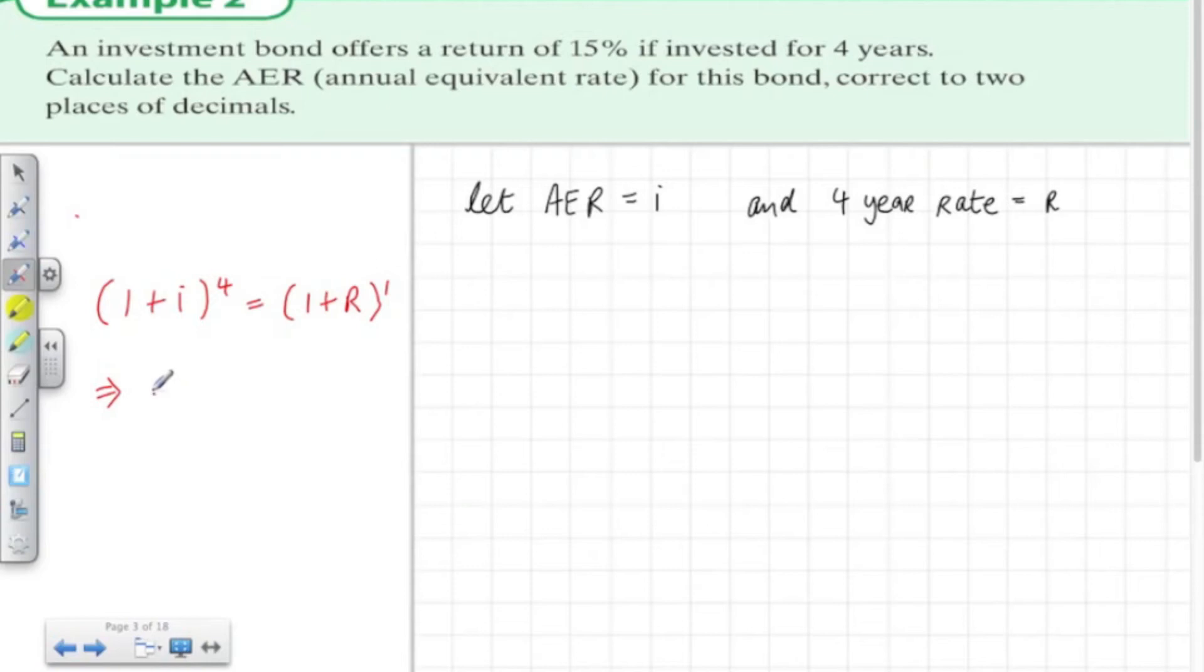So changing the subject of the formula, i, the annual equivalent rate, is equal to the fourth root of 1 plus r minus 1.